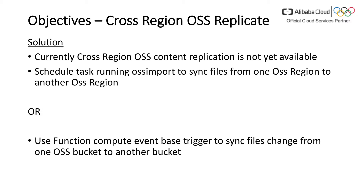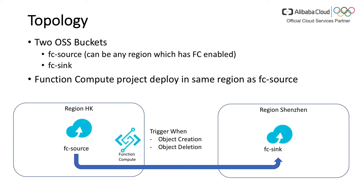The objective is quite simple: to provide cross-region OSS replication. Currently there are two solutions. One solution is to use the OSS import tools to manually schedule a task in one region and use that command to copy content from one region to another, because cross-region OSS content replication is not yet natively available. Alternatively, we will use Function Compute, which is an event-based trigger, to synchronize file changes from one source bucket to another.